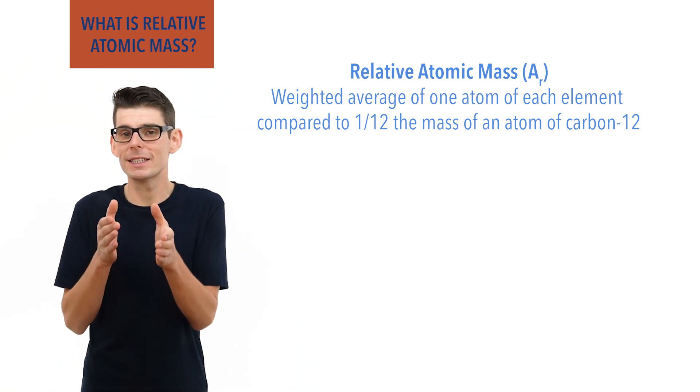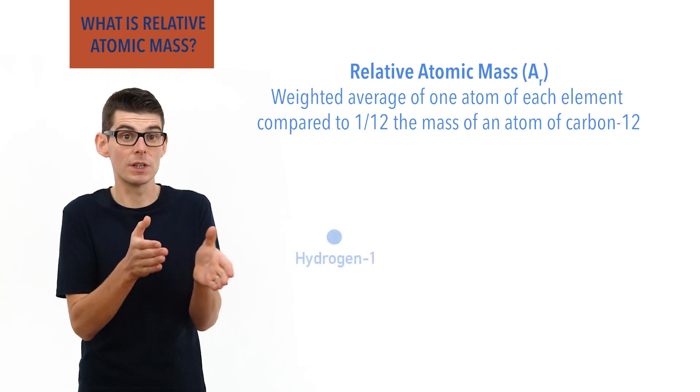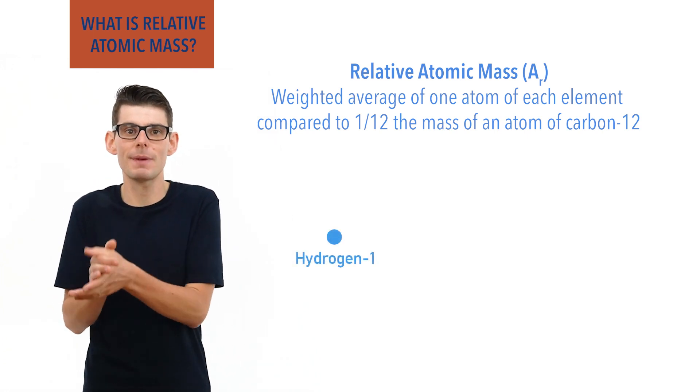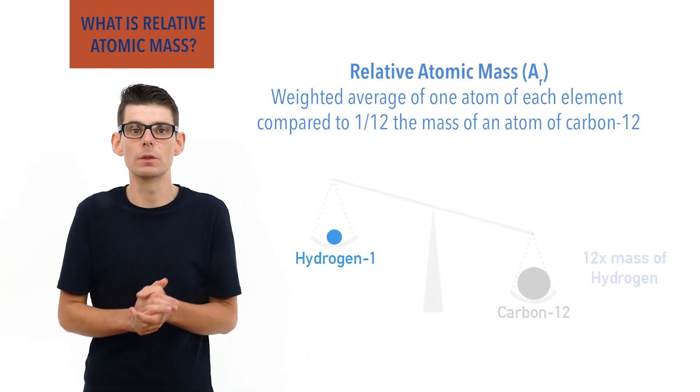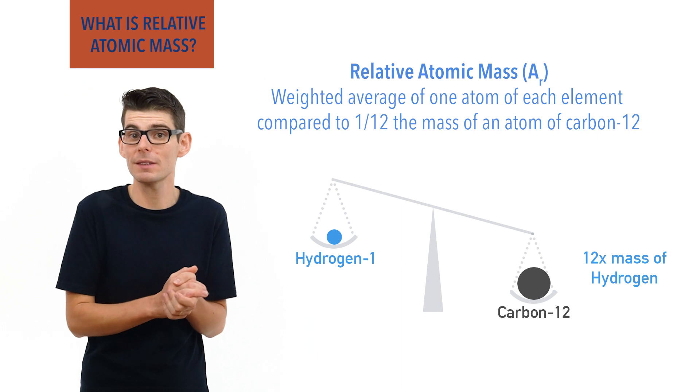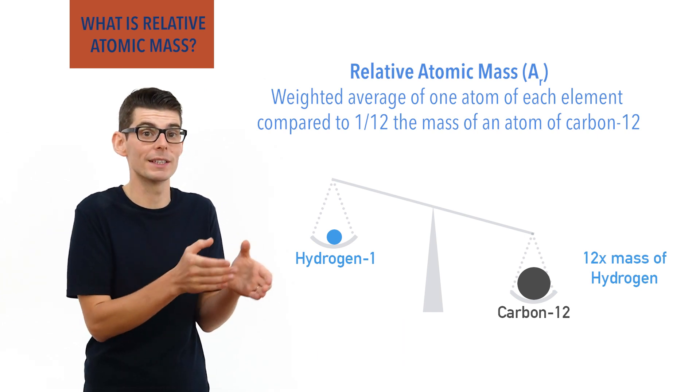From experiments and mass spectrometry we know that an atom of hydrogen, the smallest atom possible in the universe, has 12 times less mass than an atom of carbon 12. This means all elements relative atomic masses can be compared to this smallest possible relative mass.